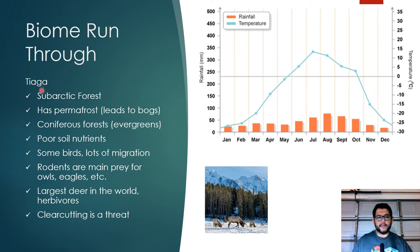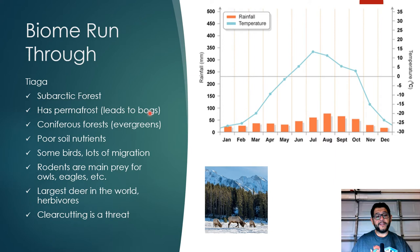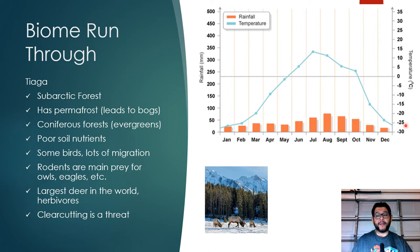One of the first biomes mentioned in the CED is the taiga, a subarctic forest. From the climatograph, temperature rises a little in summer but only reaches about 12 to 15 degrees Celsius — not very hot. Rainfall is pretty low. The taiga has permafrost, which leads to bogs and pools of water. It's famous for its coniferous forests, has the largest deer like caribou, birds of prey, and many rodents. Its threats are clear-cutting and climate change causing permafrost melt.